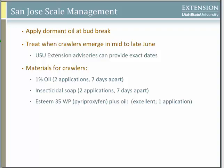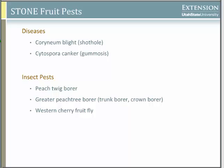We'll switch gears to stone fruit pests — peaches, nectarines, apricots, cherries. Starting with coryneum blight, a fungal-caused disease also known as shot hole because the injured area drops out of the foliage, making it look like it's been shot up. On fruit, it causes scabby, corky lesions. It's particularly active in spring and fall, the two primary times when new infections happen.